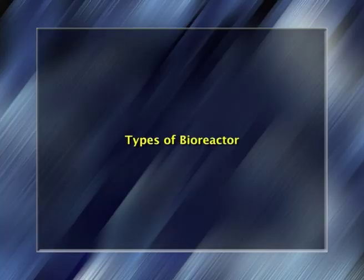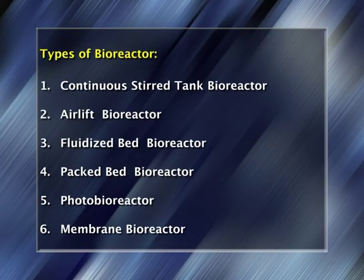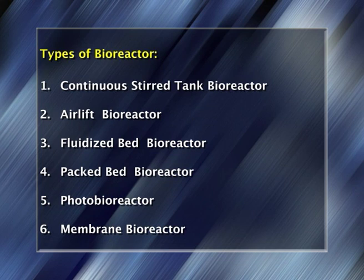Let us discuss the last part of today's lecture: the types of bioreactor. The various types of bioreactor include: 1. Continuous stirred tank bioreactor. 2. Airlift bioreactor. 3. Fluidized bed bioreactor. 4. Packed bed bioreactor. 5. Photobioreactor. 6. Membrane bioreactor. Let us discuss them one by one.